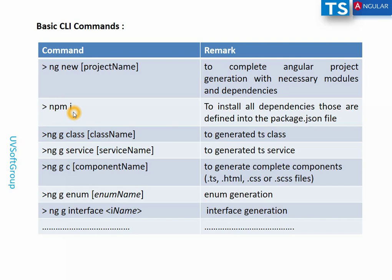An important command: once the application is created and imported into Visual Studio Code, run `npm i`. This refreshes and installs all dependencies — even if they are already there, running it again ensures all dependencies defined in the packages are correctly checked and installed.